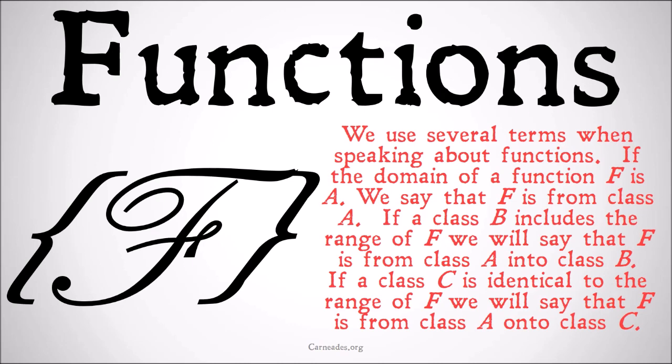We use several terms when speaking about functions. If the domain of a function f is A, we say that f is from class A. If a class B includes the range of f, we will say that f is from class A into class B. If a class C is identical with the range of f, we would say that f is from class A onto class C. And we're going to get into more of this when we talk about injection, surjection, and bijection.